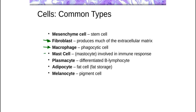Mast cells, sometimes referred to as mastocytes, are fairly common in connective tissues. They tend to be involved in monitoring what's going on and responding with an immune response if they notice something that doesn't belong — they're quite often involved in allergic reactions. Plasmocytes are differentiated B lymphocytes — white blood cells that have specialized and are producing antibodies. Adipocytes are fat cells. Melanocytes are pigment cells that produce melanin, the pigment responsible for your eye color, skin color, and hair color.